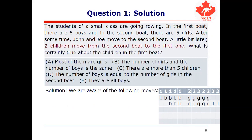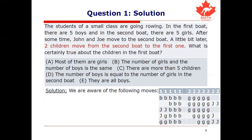A little bit later, two children move from the second boat to the first one. Finally, some ambiguity! There are three possible scenarios that could be unfolding right this minute. It could be that John and Joe decided they didn't like this boat and moved back into boat one. It could be that one of John and Joe moved back along with a girl into boat one. Or it could be that John and Joe stayed where they were and two girls have instead moved into boat one. We have three possible scenarios happening right now.